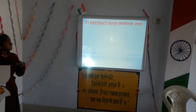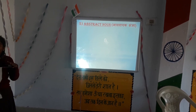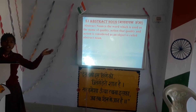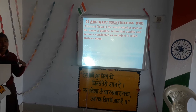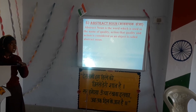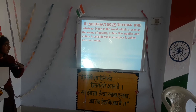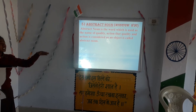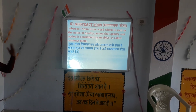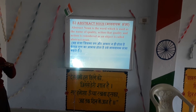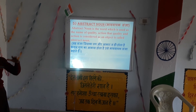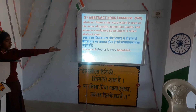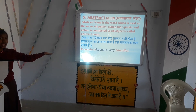And last is abstract noun. What is an abstract noun? An abstract noun is a word used for the name of a quality or action — that quality and action cannot be seen or touched. For example, Rina is very beautiful — beautiful is an abstract noun.